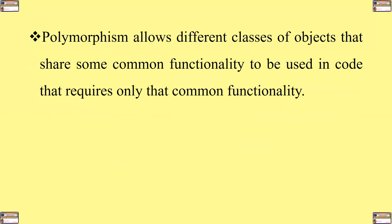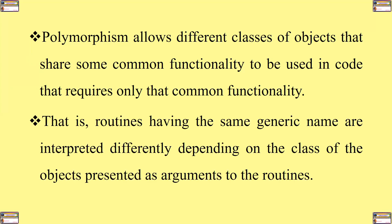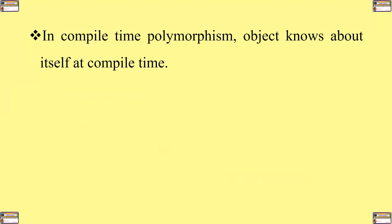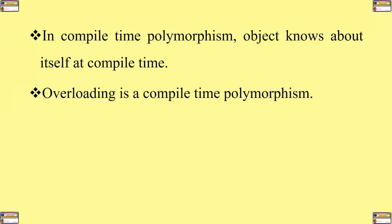Polymorphism allows different classes of objects that share some common functionality to be used in code that requires only that common functionality. Routines having the same generic name are interpreted differently depending on the class of the objects presented as arguments. In compile-time polymorphism, an object knows about itself at compile time. Overloading is a compile-time polymorphism.